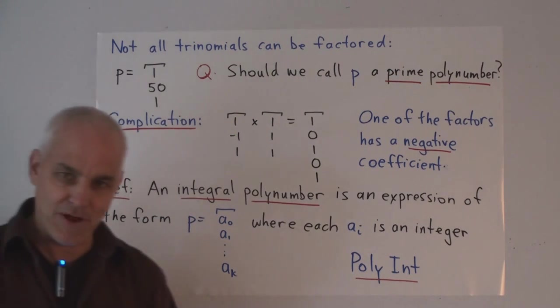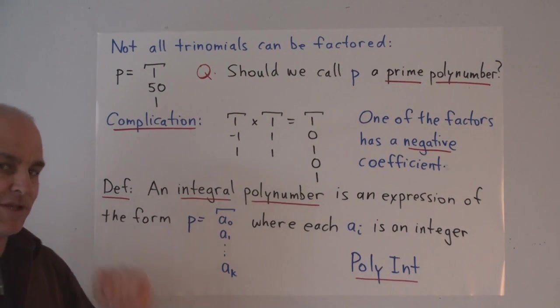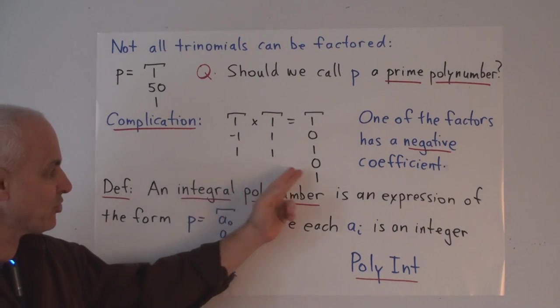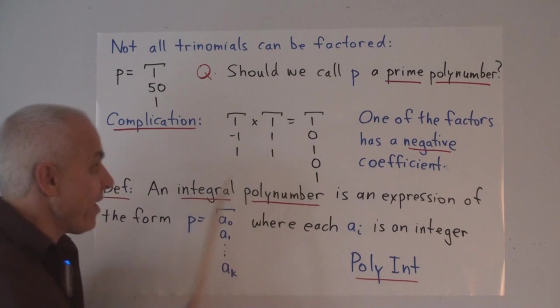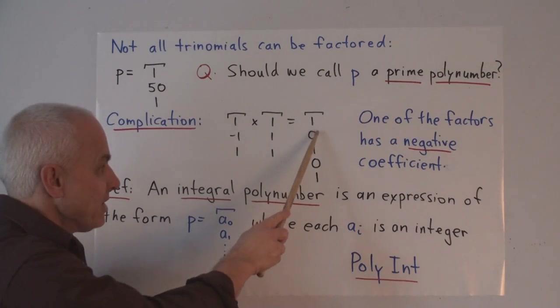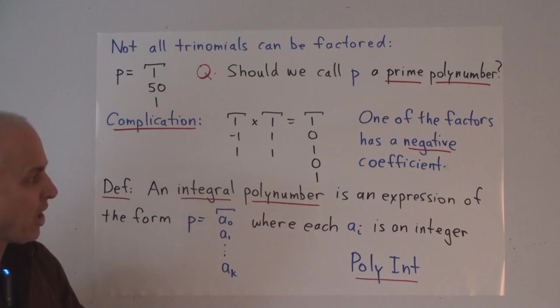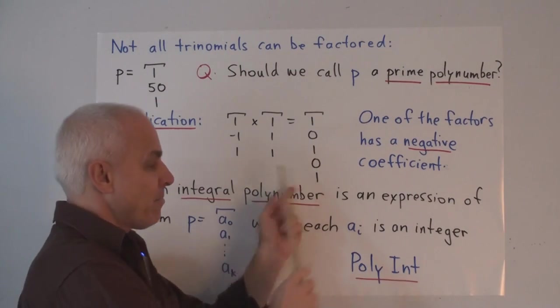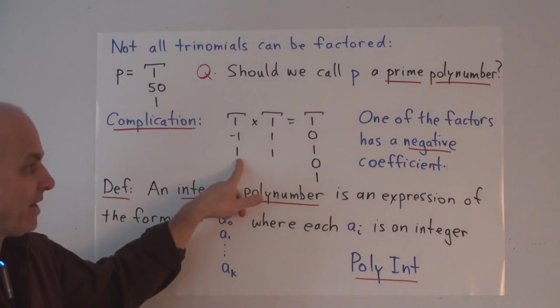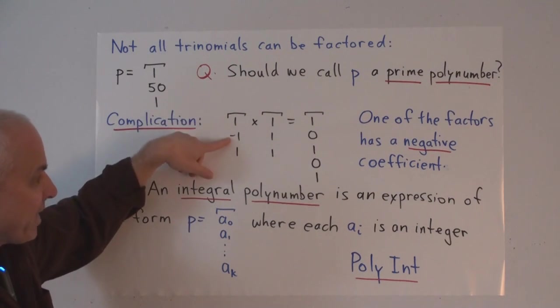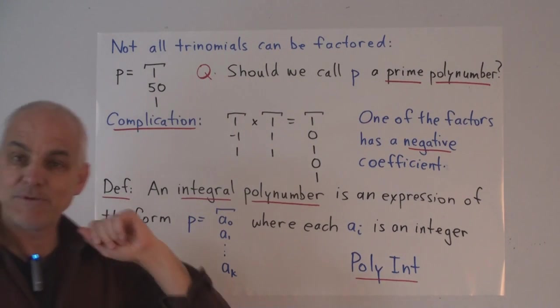However, an interesting complication arises when we move from binomials and trinomials to slightly larger polynumbers. And here's a very interesting example. The polynumber 1,-1,1, which is itself a trinomial, times 1,1,1 is 1,0,1,0,1. So this polynumber, which is a positive polynumber, factors. But one of its factors, this one here, is a polynumber with a negative coefficient.